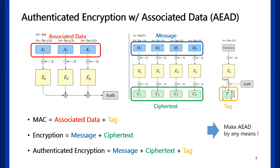If you want MAC, you can make only associated data input and get tag. If you want encryption, you can make message input and get ciphertext. For authenticated encryption, you can make message input and get ciphertext and tag.